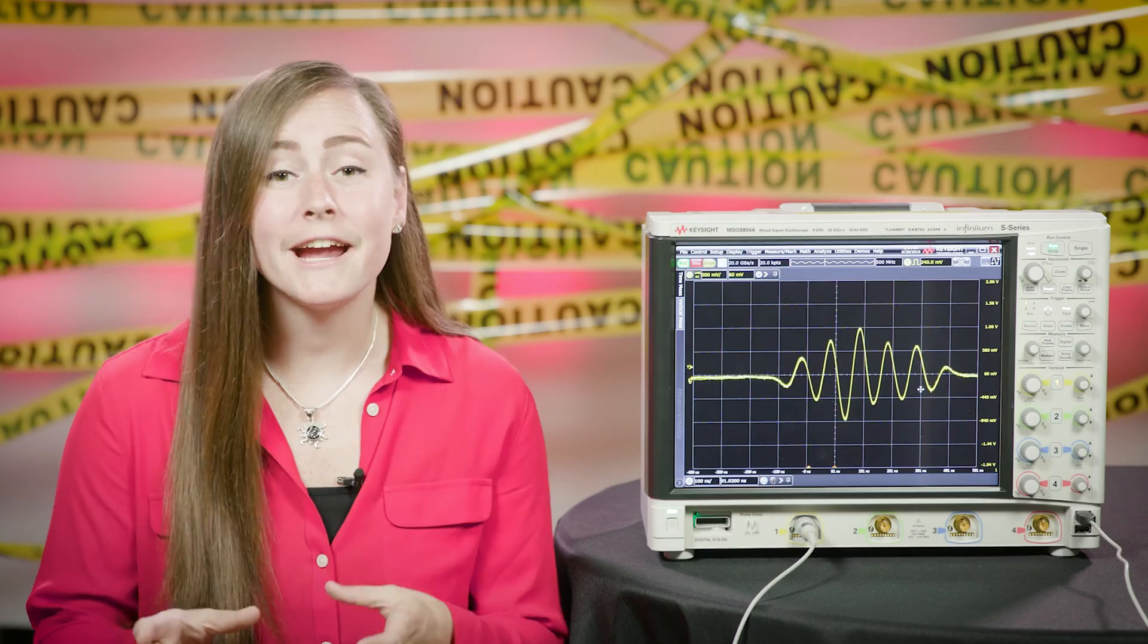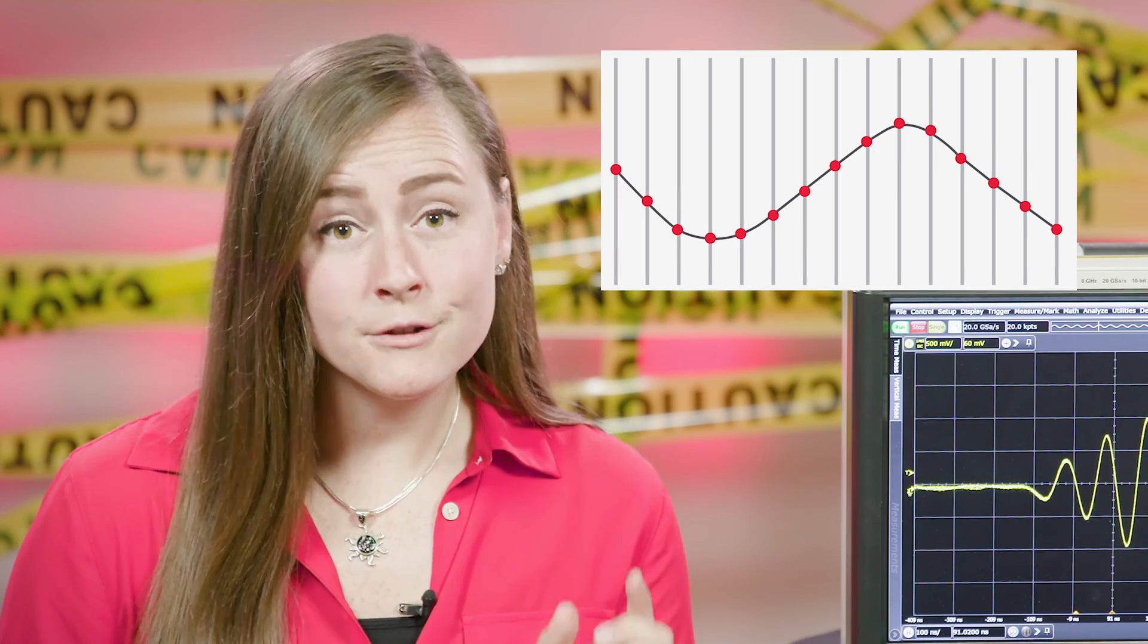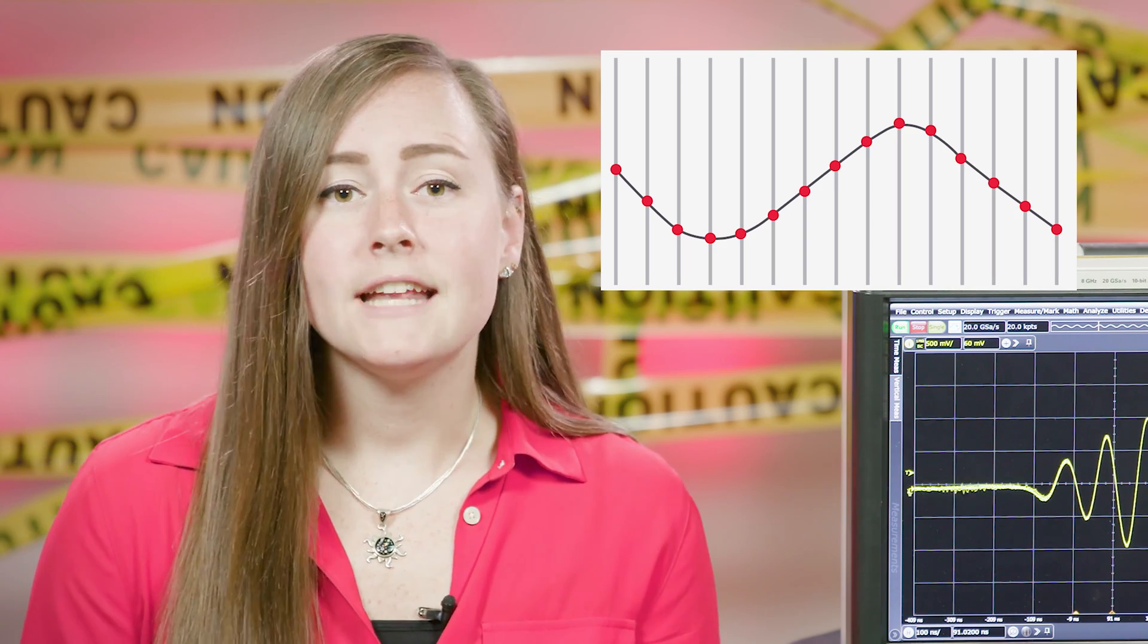They're stored in memory and eventually processed and displayed on the screen. Simply put, the sample rate is just the rate at which the sampler collects samples. The sample rate is measured in samples per second. This rate ultimately affects the signal that you see on screen. In a well-designed oscilloscope, samples will occur at a consistent rate with no variation. We'll learn about why that's important in a little bit.